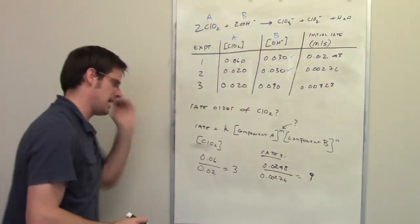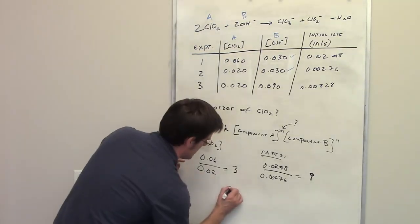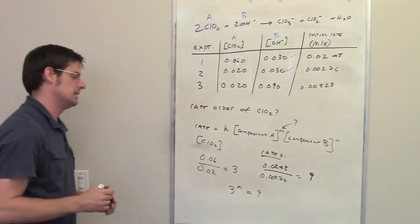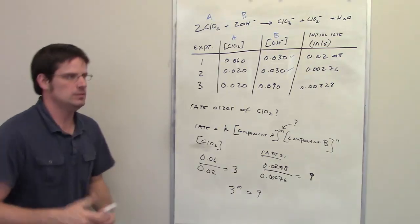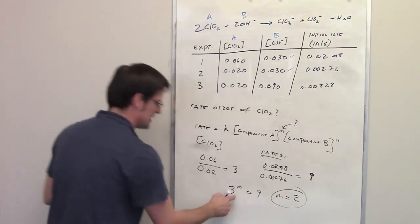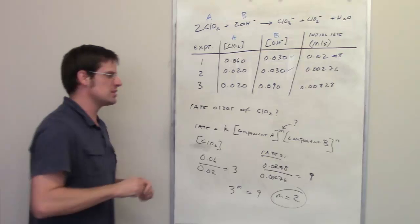So what do these two numbers mean now? How do I use them? Well, all I do now is I take 3 and raise it to the M and set that equal to 9 and solve for M. What is M? Well, assuming you know how to do basic algebra, you'll discover that M is equal to 2. 3 squared is 9, so M is 2. That is the answer to this question.